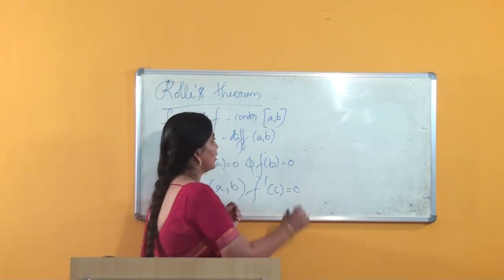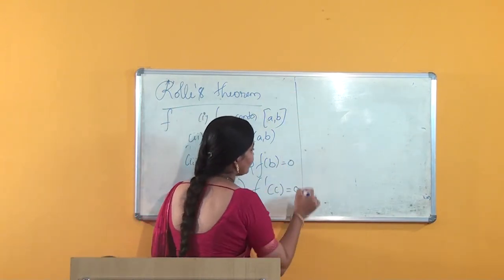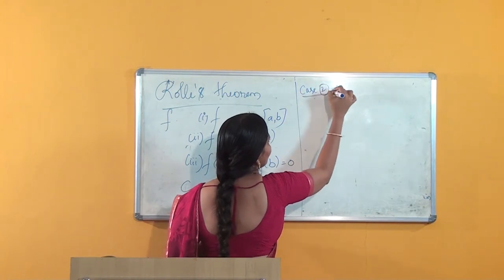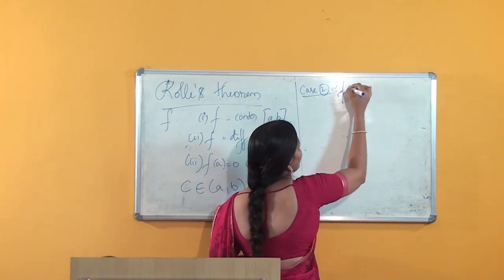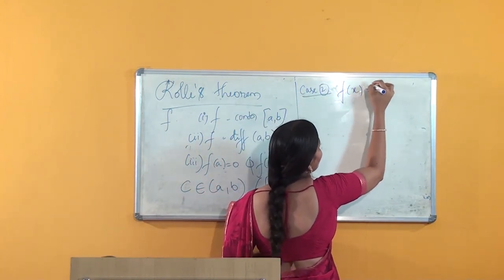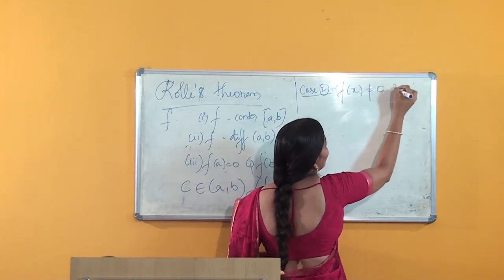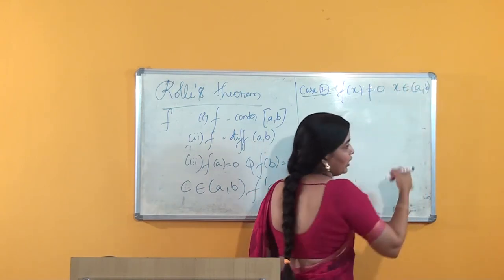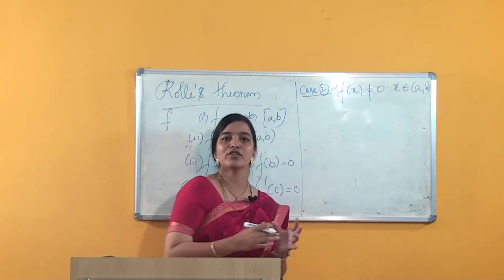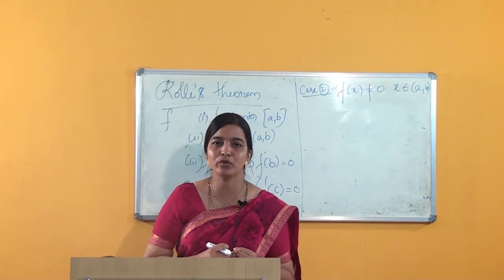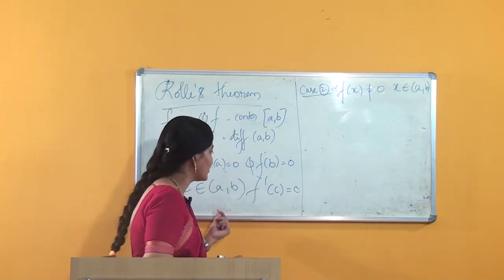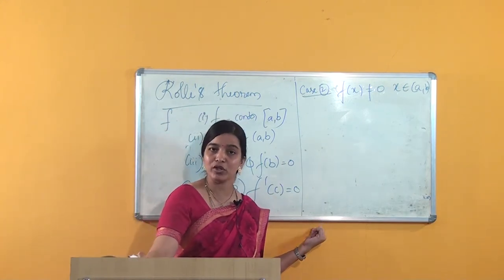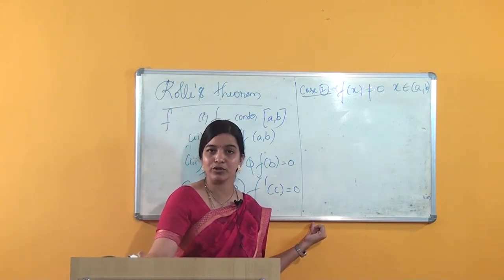Now Case 2: suppose f(x) is not equal to 0 for some x belonging to (a, b). If it is not equal to 0, how can we prove that there exists a c belonging to (a, b) such that f'(c) = 0?